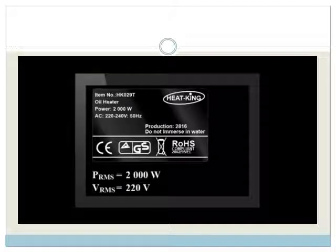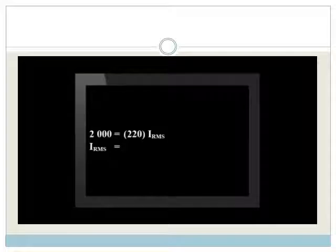The equation to calculate the power consumption of an alternating current appliance is the same as the one you used before, the RMS voltage multiplied by the RMS current. See if you can find the current that flows through this appliance.